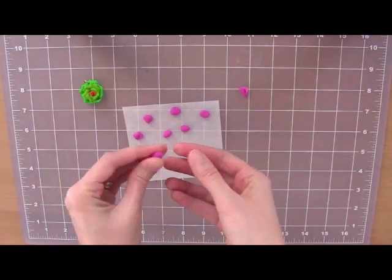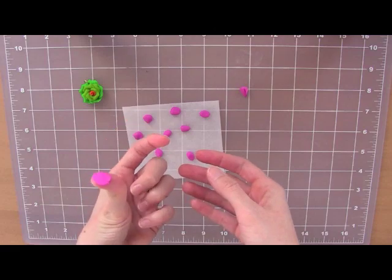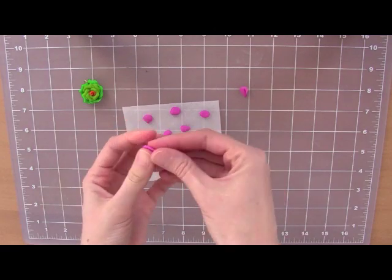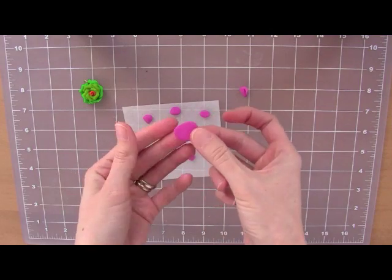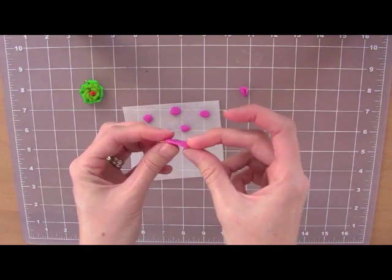Now, I want to take one of the other little balls of clay and start squishing it down. This is that pancake method that I was talking about. So what we want to do is make exactly that, little pancakes.